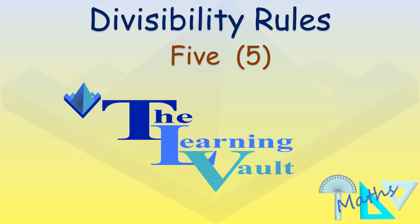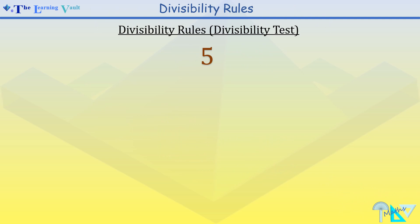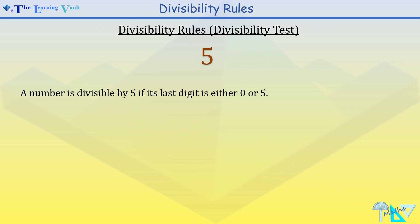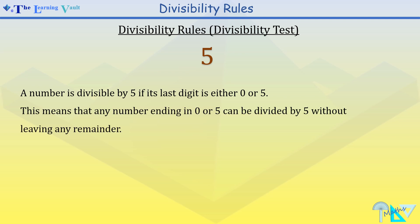Welcome to divisibility rule with number 5. A number is divisible by 5 if its last digit ends in 0 or 5. This means that any number ending in 0 or 5 can be divided by 5 without leaving any remainder.